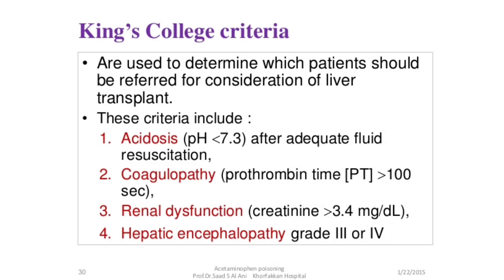There is the King's College criteria, which is used to predict mortality in patients who have consumed Paracetamol. The major criteria are: pH less than 7.3 even after fluid resuscitation, PT more than 100 seconds or INR more than 6.3, or creatinine more than 3.8 mg/dL. All these point towards very high mortality in Paracetamol consumption, and in all these cases the patient must be referred to a liver specialist.